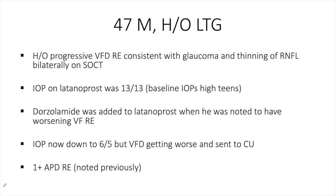The next patient is a 47-year-old male with history of progressive visual field defect on the right side consistent with glaucoma and thinning of RNFL bilaterally on OCT. Pressure on latanoprost was 13 in both eyes, and baseline pressure was in the high teens. Dorzolamide was added to latanoprost when he was noted to have worsening of the visual field defect on the right side, bringing pressure down to 6 on the right and 5 on the left, but visual field defects continued to worsen.